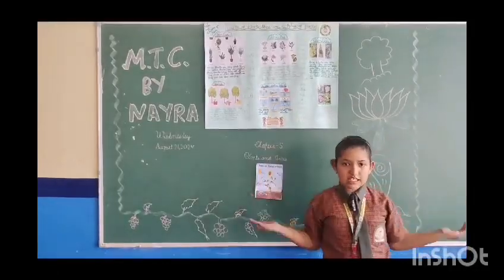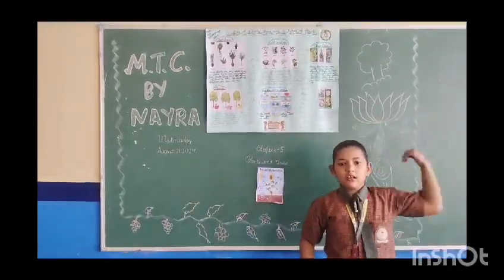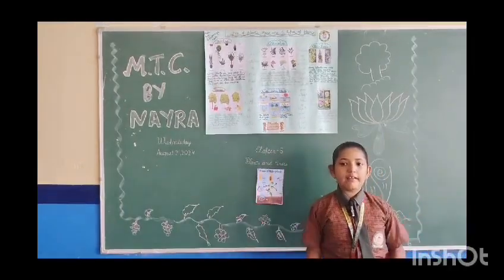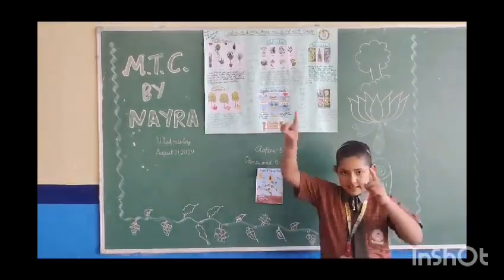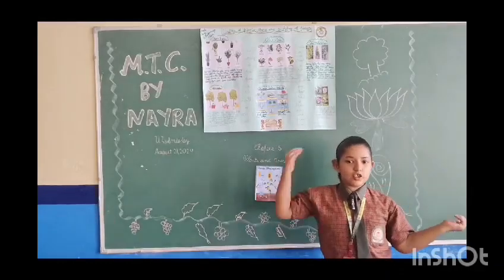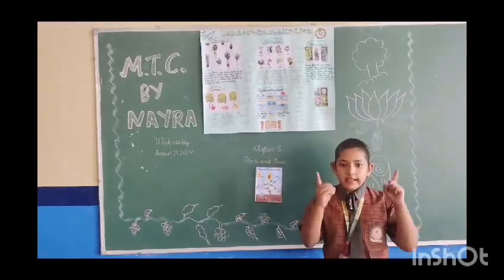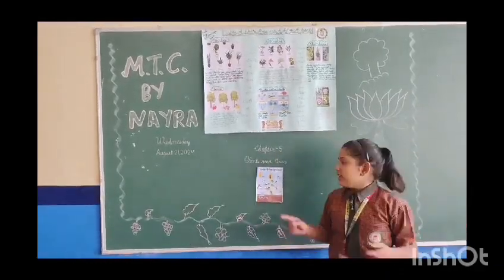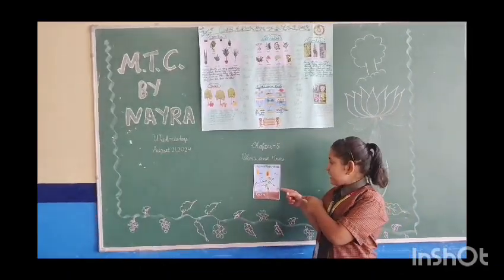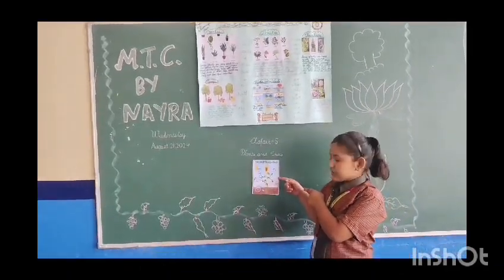Now we will discuss what is photosynthesis. The process by which plants make their own food using chlorophyll, carbon dioxide and water in the presence of sunlight, and give us oxygen and sugar in the form of food, is called photosynthesis. So students, this is the diagram of photosynthesis.